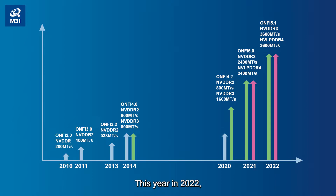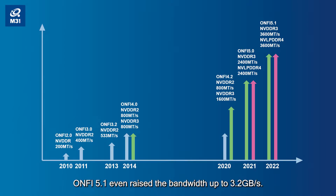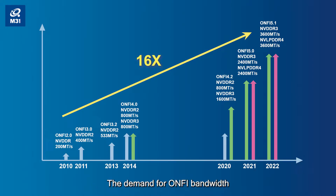This year, in 2022, ONV 5.1 even raises the bandwidth up to 3.2 GB per second. The demand for ONV bandwidth has grown rapidly over the past decade.